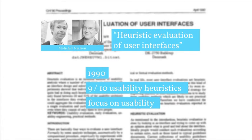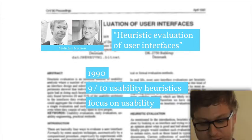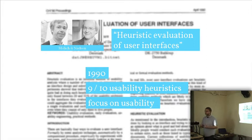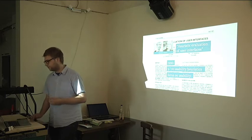Just a small introduction. Molich and Nielsen were the first around 1990 with heuristic evaluation of user interfaces — a paper that they published that year. Between 9 and 10 usability heuristics, depending on which version of the paper you look at. You may really see heuristics as a rule of thumb. The idea about heuristic evaluation is that an expert reviewer uses these heuristics to describe the good points and the bad points about a website, and that's a big difference against a checklist, where there is little room for the expertise of the current person conducting the experience.